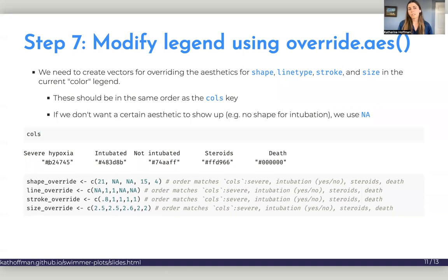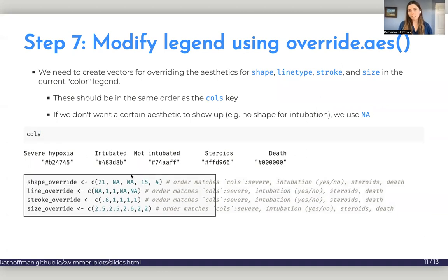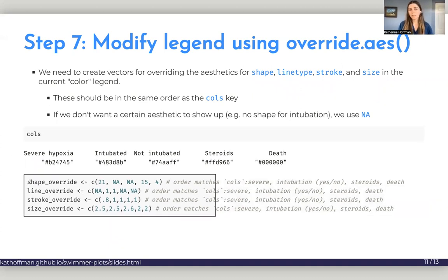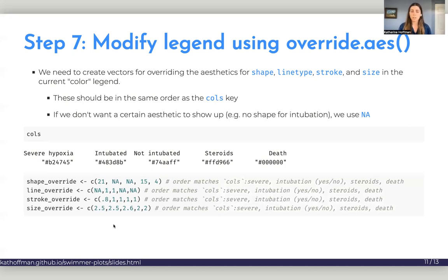And as a reminder, the calls key looks like this. So it's severe hypoxia, like all the names, and then all the colors that they correspond to. And we'll just make vectors that go in that same order. So for shape override, if you remember for the geom_points, we said that hypoxia should be a shape of 21, because we wanted it to be a circle. We don't want a shape to show up for intubated and not intubated in our legend, so we're going to use NA. We have a shape of 15 and 4 for steroids and death, respectively. Similar idea for all of the other characteristics. We don't want a line to show up for our status indicators, but we do want them to show up for intubation.